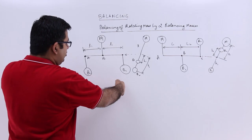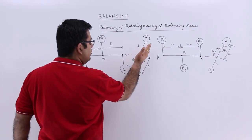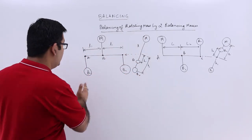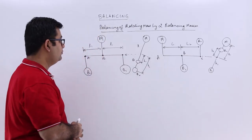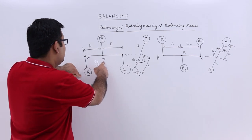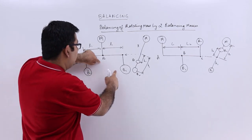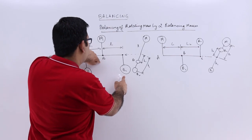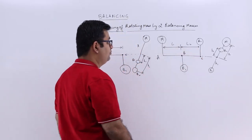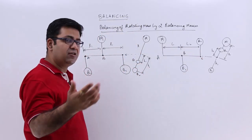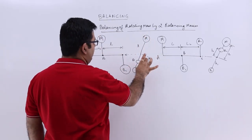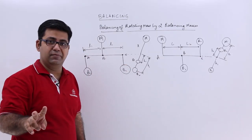This is the front view and this is the side view. You can see that they all appear to be in the same plane but actually they are in different planes. The distance of the first balancing mass from the disturbing mass is L1, and the second balancing mass from the disturbing mass is L2. The radii of rotation for the disturbing mass is R, for the first balancing mass B1, and the second balancing mass B2.